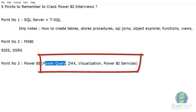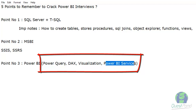Then we have DAX, which helps to unleash the power of Power BI and assists in data analysis. Prepare for DAX functions categorized into logical, arithmetic, time intelligence, table, string, and more — including calculated measures, calculated columns, tables, relationships, and what-if parameters. Once done with DAX, focus on visualization types like tables, slicers, bar charts, line charts, and finally Power BI Services — knowing dashboards, row-level security, data gateways, and publishing reports to Power BI Services.